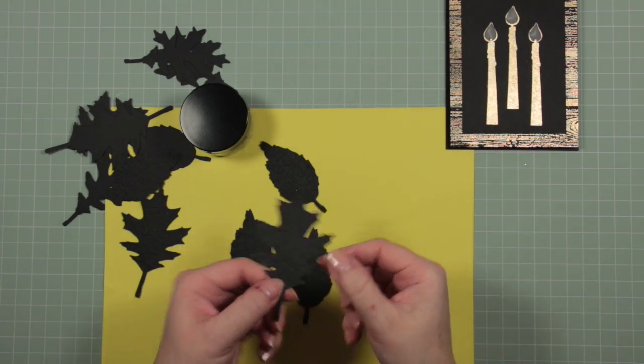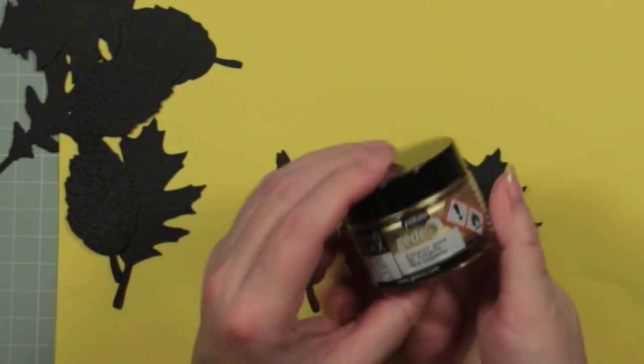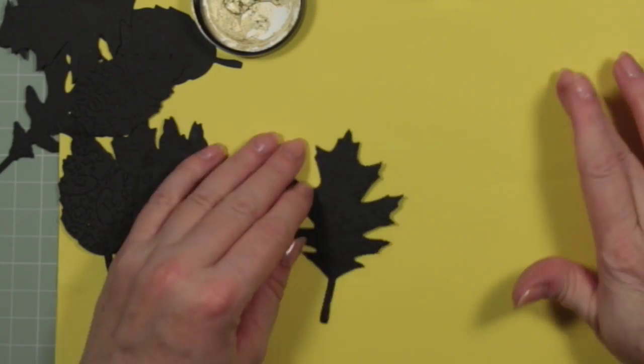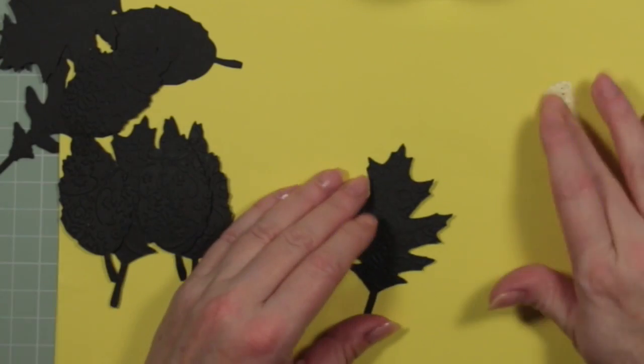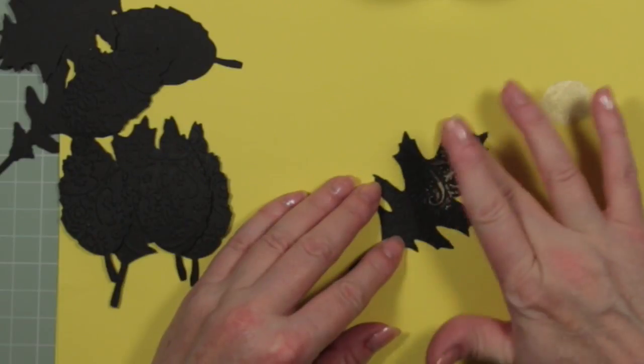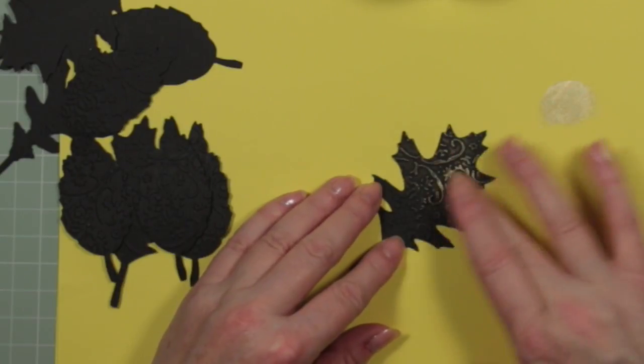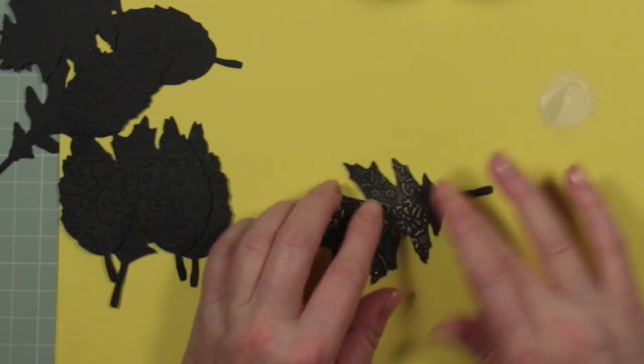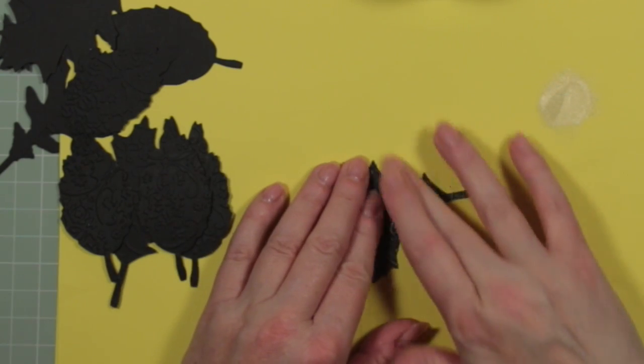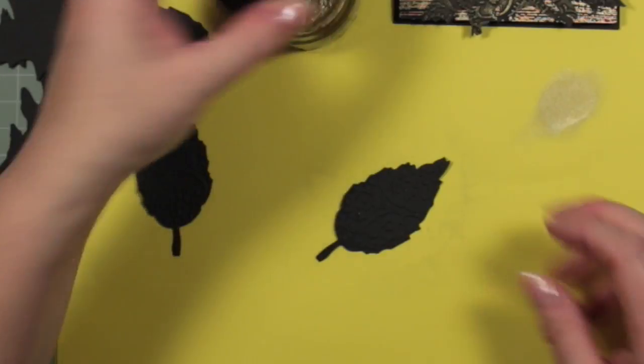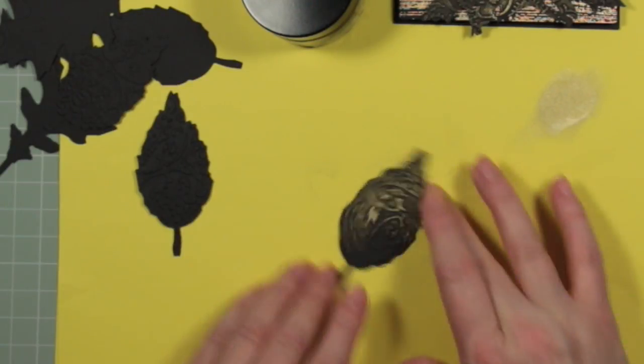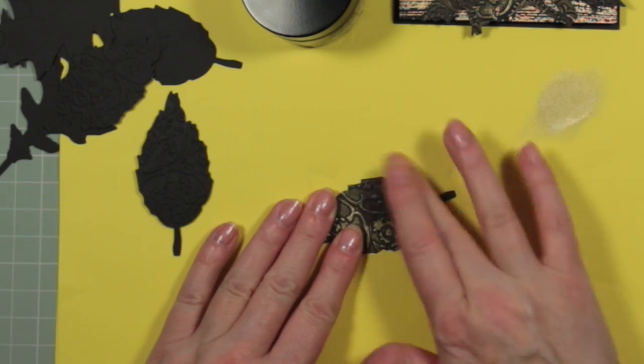So now we have to create a base for those candles to sit in and I'm using a Pebeo wax. This is a gold wax. It's lovely to use. A little bit goes a long long way and now you can see why we wanted all of that texture on the leaves because the wax really brings out and highlights all of the lovely shapes.